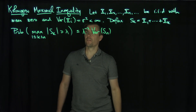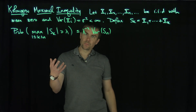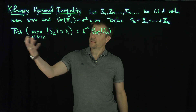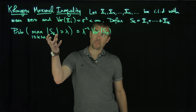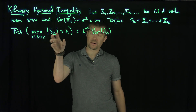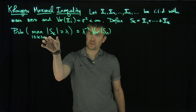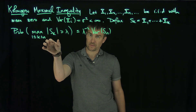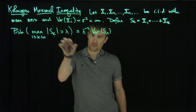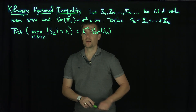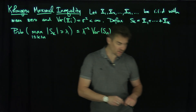Of course, it's a maximal estimate, because we're estimating the probability that the maximum of any one of these partial sums is larger than lambda. So we're looking at the biggest partial sum and asking whether it exceeds lambda.